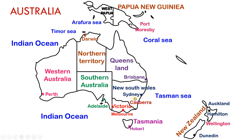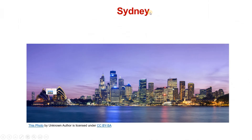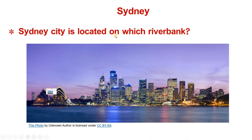Let's start with Sydney. Sydney is located near Canberra, the capital of Australia, in New South Wales. Sydney City is located on the Darling Riverbank.